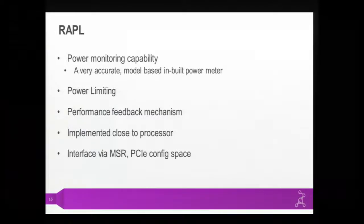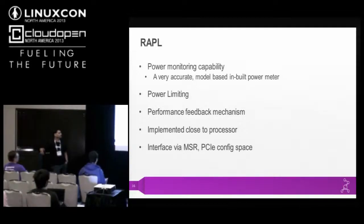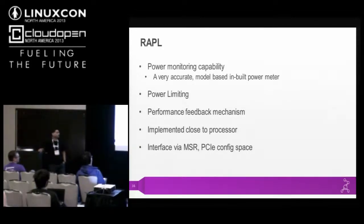RAPL also gives performance feedback: when you limit power, it affects performance, and RAPL has the ability to provide that feedback. Since it is implemented so close to the processor, it is very reactive and takes very little time to perform any operation. The interface to RAPL is described in the Intel IA-64 software developer's guide. It is exported via MSR — model specific registers — and PCI config space.